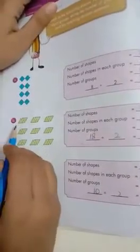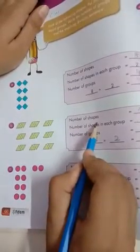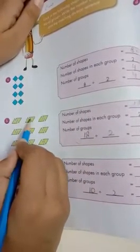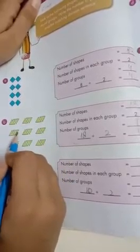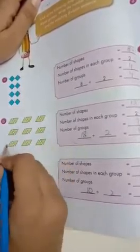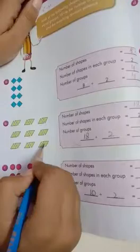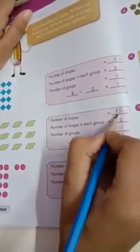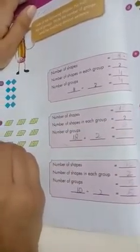After this, we will count number of shapes. We will count 1, 2, 3, 4, 5, 6, 7, 8, 9, 10, 11, 12, 13, 14, 15, 16, 17, 18. How many number of shapes are there? Eighteen. Here we write 18.